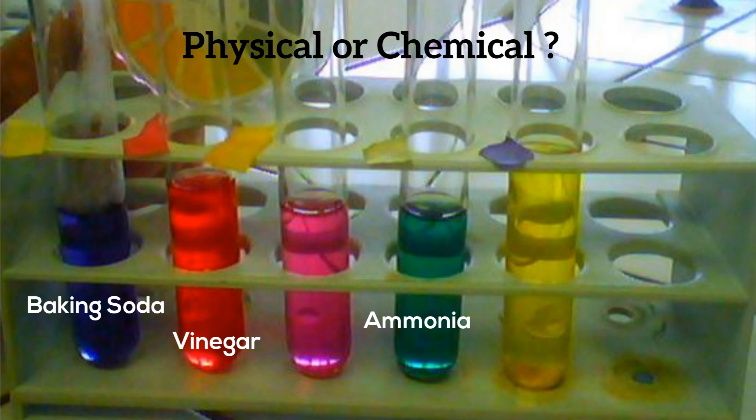This is a chemical change. It's a picture, but it's a classic example of a change in color. The cabbage juice is mixed with different solids and each substance creates a different color.